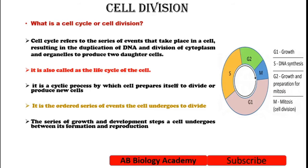So, cell cycle means — if we say it's a cycle, the life cycle of the cell — where it passes through different stages and accumulates food material, and repairs itself for cell division. Cell division is the final outcome where the cell divides, producing all the necessary proteins along the way.